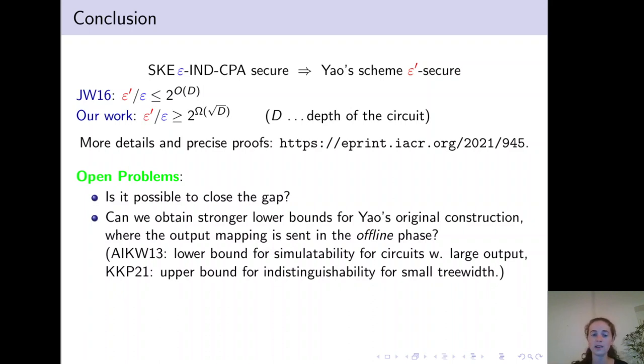On the other hand, in a concurrent work that we published on e-print, we gave an upper bound for indistinguishability for Yao's original scheme that depends on the tree width. However, an interesting result in this direction could be to construct circuits of small depth and small output that incur a loss exponential in the input size, potentially even for indistinguishability.